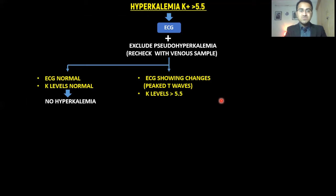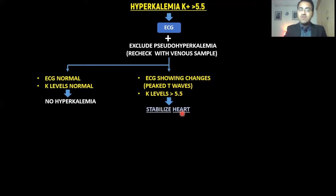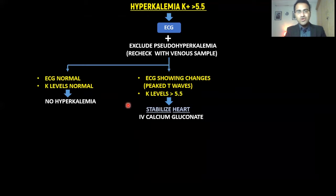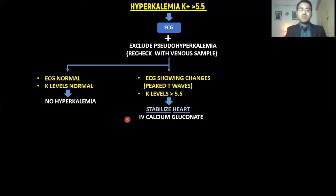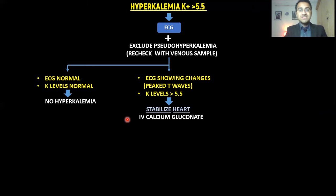In a patient with hyperkalemia showing ECG changes, the first step is to stabilize the heart. You give IV calcium gluconate, which stabilizes the heart and protects it from arrhythmias due to high potassium levels. Importantly, IV calcium gluconate does not lower the potassium level — it just protects the heart.